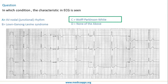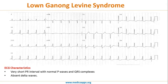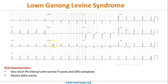Another syndrome is Lown-Ganong-Levine syndrome. In this condition, the PR interval is very, very short, but there is no slurring — absent delta wave. So the characteristics are a very short PR interval with a normal P wave and normal QRS complex but absent delta wave, which points to Lown-Ganong-Levine syndrome.